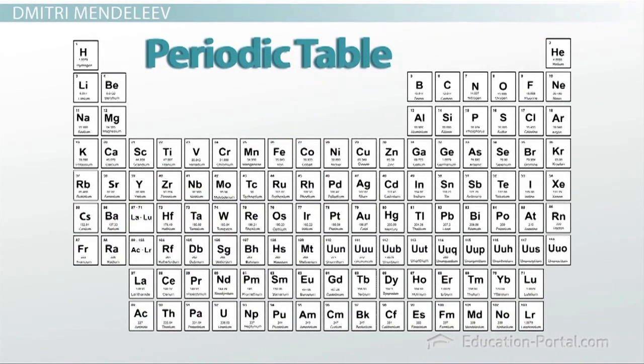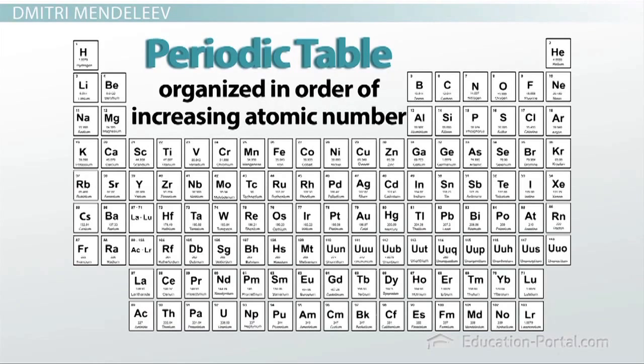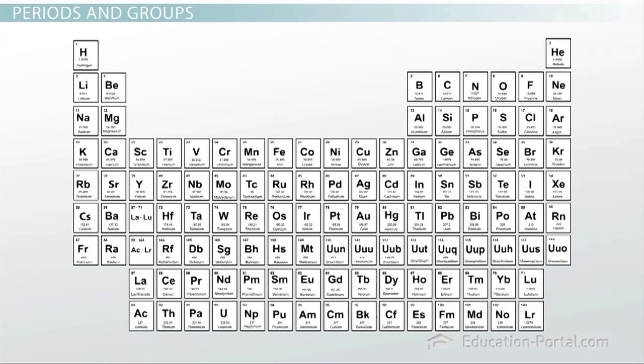We are still using this organization today in the periodic table. However, elements are currently organized in order of increasing atomic number. As Mendeleev was arranging the elements in order of increasing atomic weight, he noticed that patterns repeated periodically. Each time a pattern started over, he started a new row.